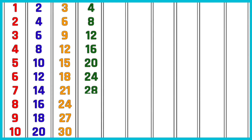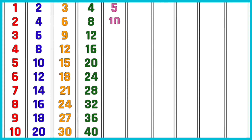4 sevens are 28. 4 eights are 32. 4 nines are 36. 4 tens are 40. Table of 5. 5 ones are 5. 5 twos are 10.